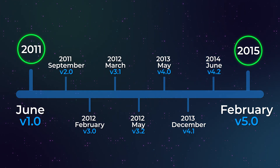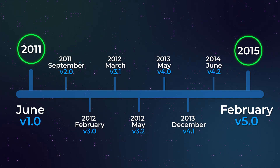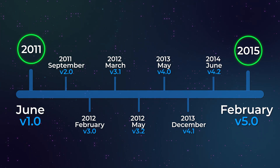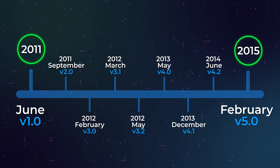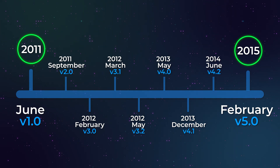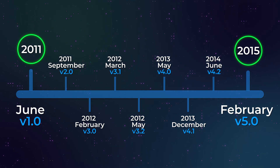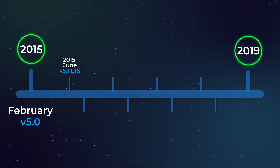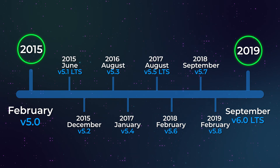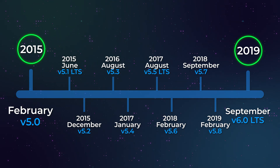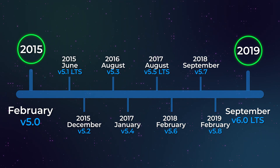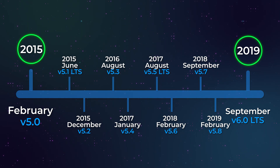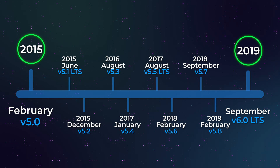With each new version, Laravel introduced innovative features such as built-in authentication, queuing system, authorization, database migrations, ORM, file system, support for various drivers, mailing, bundling systems, support for multiple front-end technologies, and the list goes on. Around the release of Laravel version 5.0 in February 2015 is when I started my journey with Laravel, though I did work on some small legacy projects built in Laravel 4.